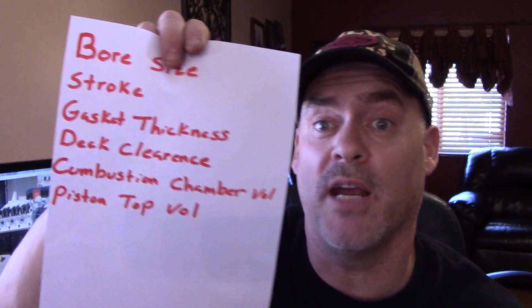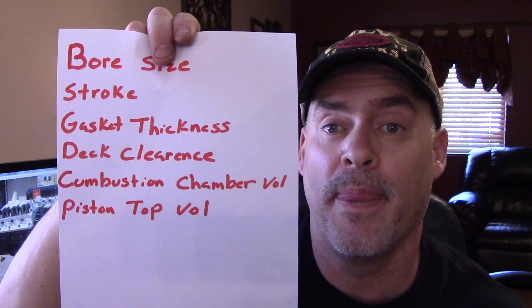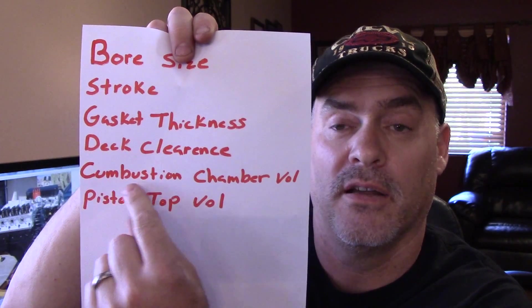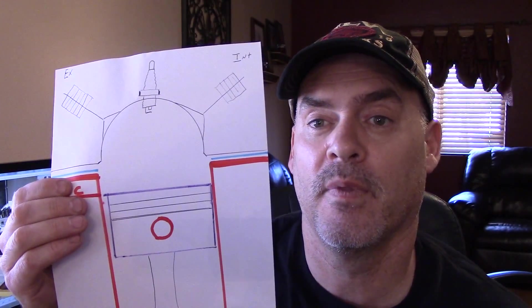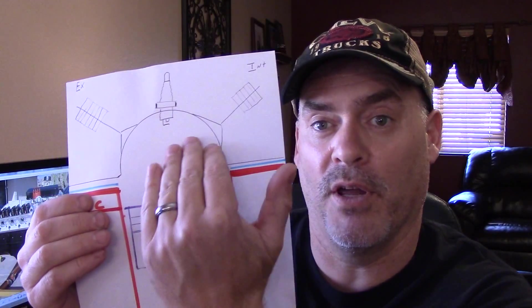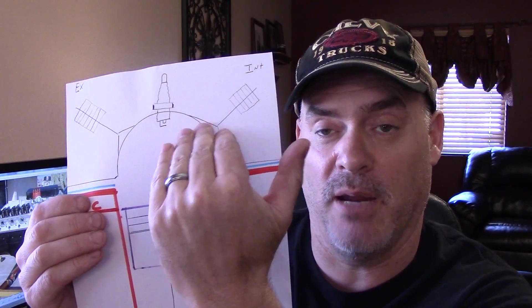The other factor is the combustion chamber volume itself — the actual size of the combustion chamber measured in cc's. Different heads have different chamber sizes. Two heads that go on the same basic engine can have two completely different chamber sizes, resulting in different compression ratios — just like those Ford heads we just saw.